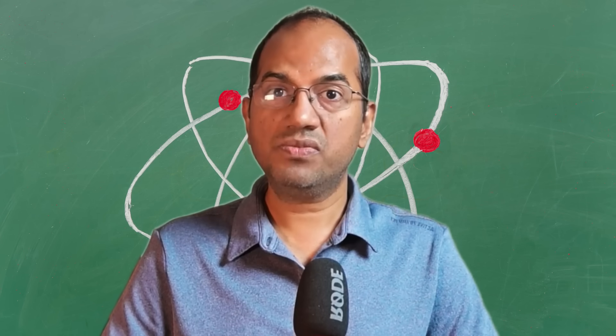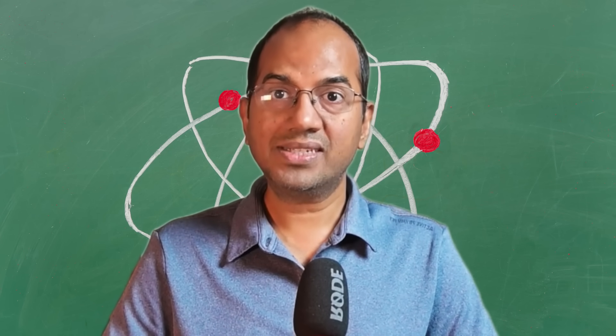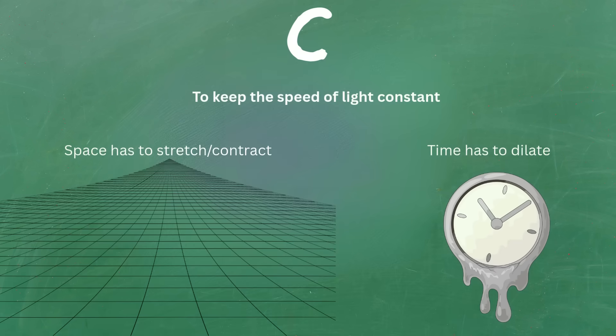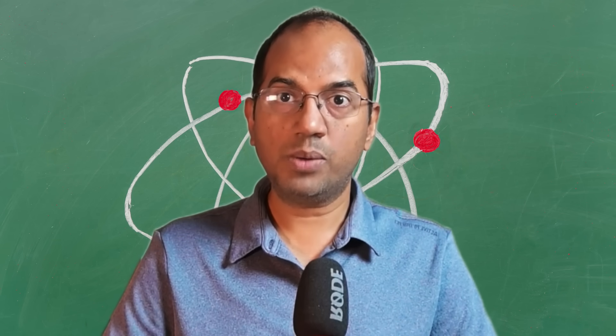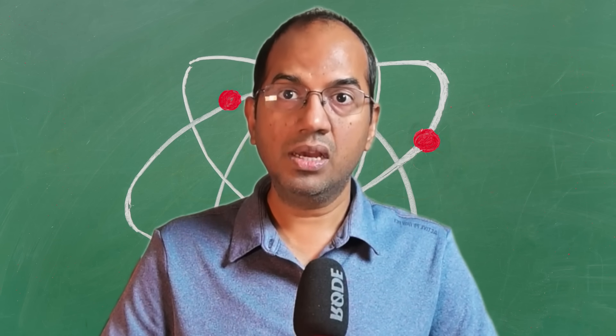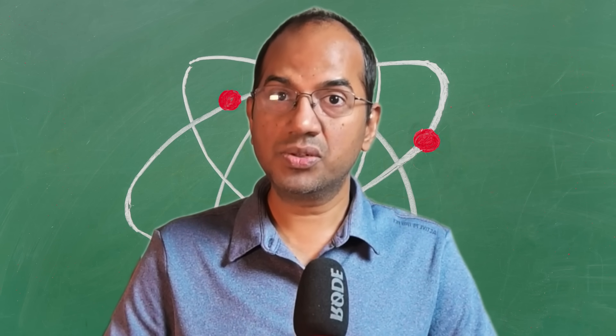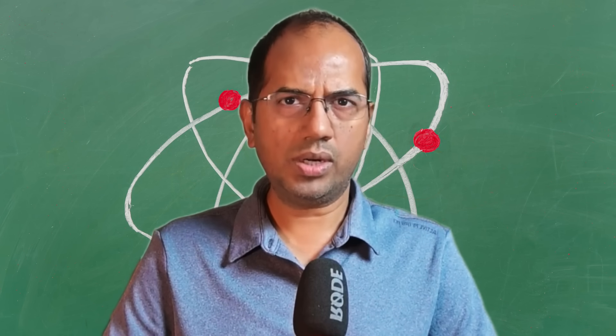To keep the speed of light constant for everyone, not only does time have to dilate, but space itself has to contract. From your point of view on the ground, an object moving at relativistic speed will appear shorter in its direction of motion. This is called length contraction.